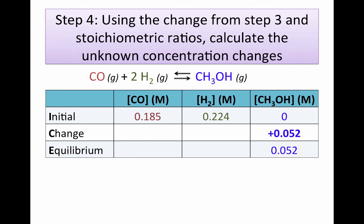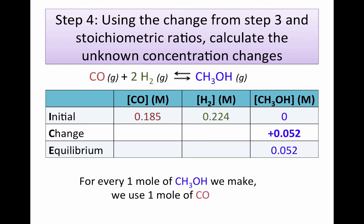In step four, we take that change and calculate the other concentration changes for our two reactants. For carbon monoxide, for every one mole of methanol that we make, we use up one mole of carbon monoxide. So we've created 0.052 molar of methanol, which means we decreased the amount of carbon monoxide by the same number, 0.052 molar.